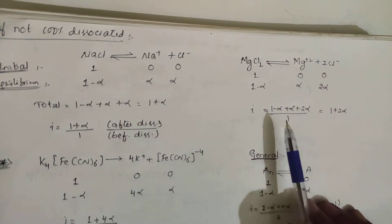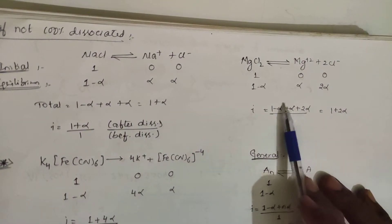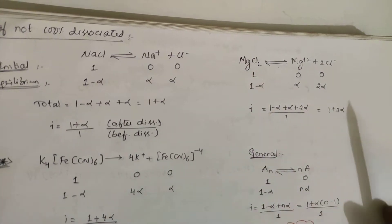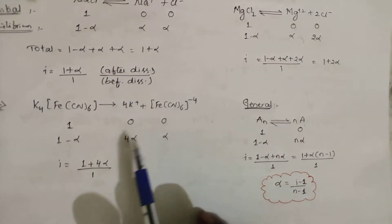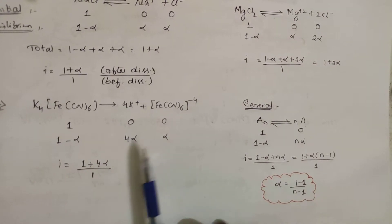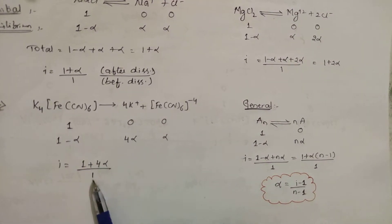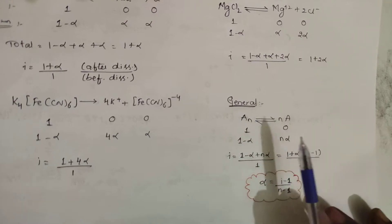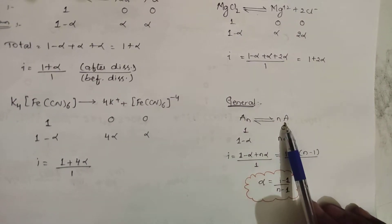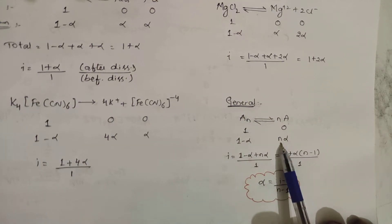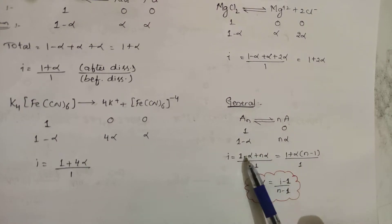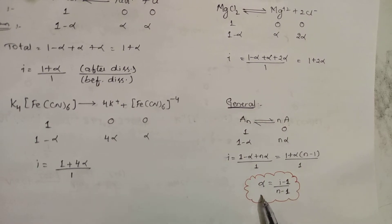For MgCl₂ with partial dissociation: remaining = (1 - α), Mg²⁺ = α, Cl⁻ = 2α. Total = 1 + 2α, so i = 1 + 2α. In general, for a compound giving n ions: i = 1 + (n - 1)α. Rearranging, the degree of dissociation α = (i - 1)/(n - 1).